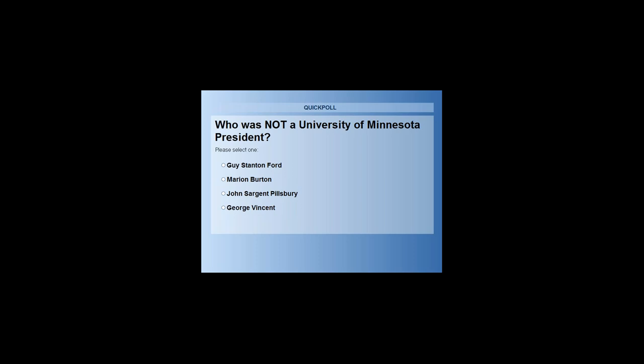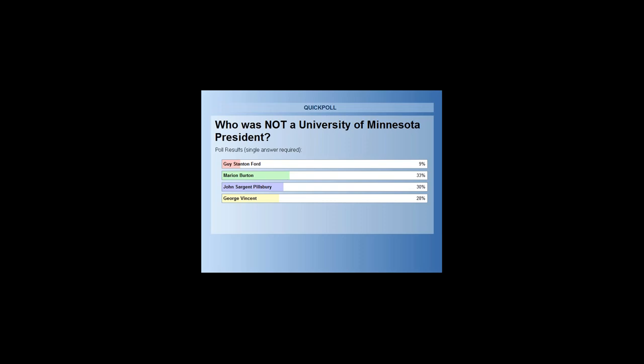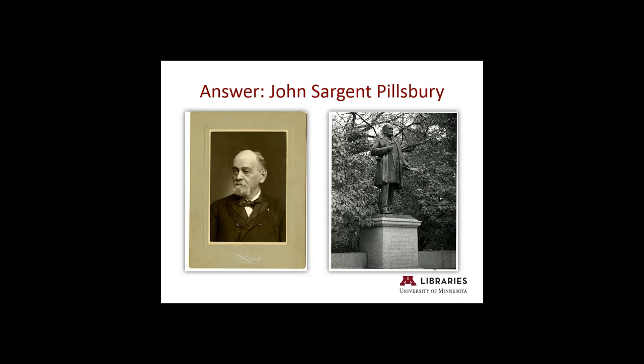The answer is: John Sergeant Pillsbury was not a University of Minnesota president. It looks like 30% of you got that correct. The other three all were University of Minnesota presidents, although many of them had fairly short tenures. We generally see their names around campus today. John Sergeant Pillsbury is best known as founder of Pillsbury Milling Company and as a former governor of Minnesota from 1876 to 1882. He served as a regent from 1863 to 1895 and was then appointed regent for life by the state legislature.